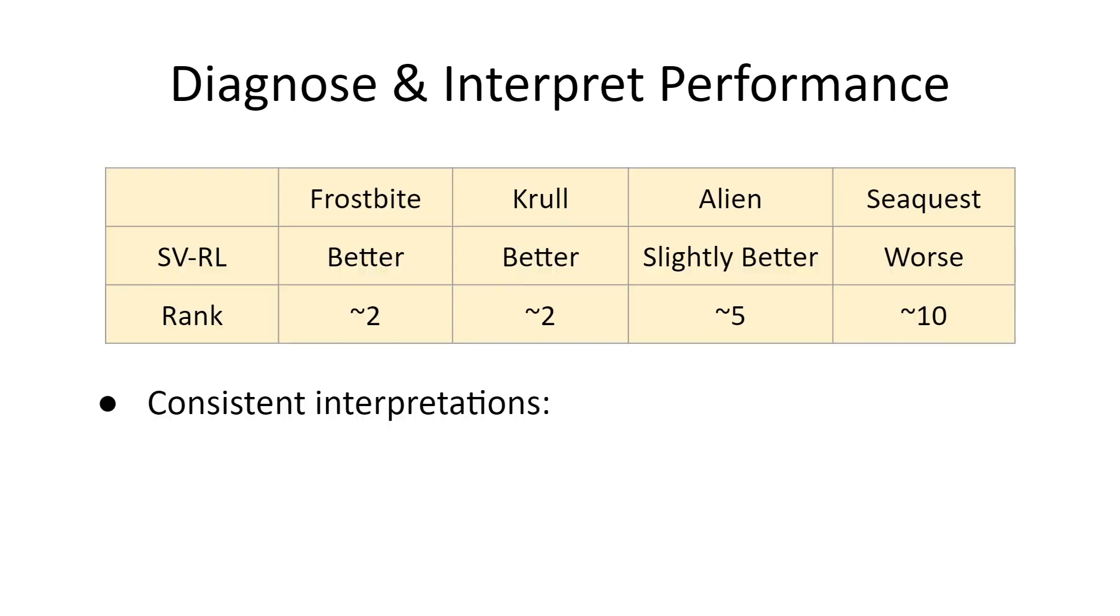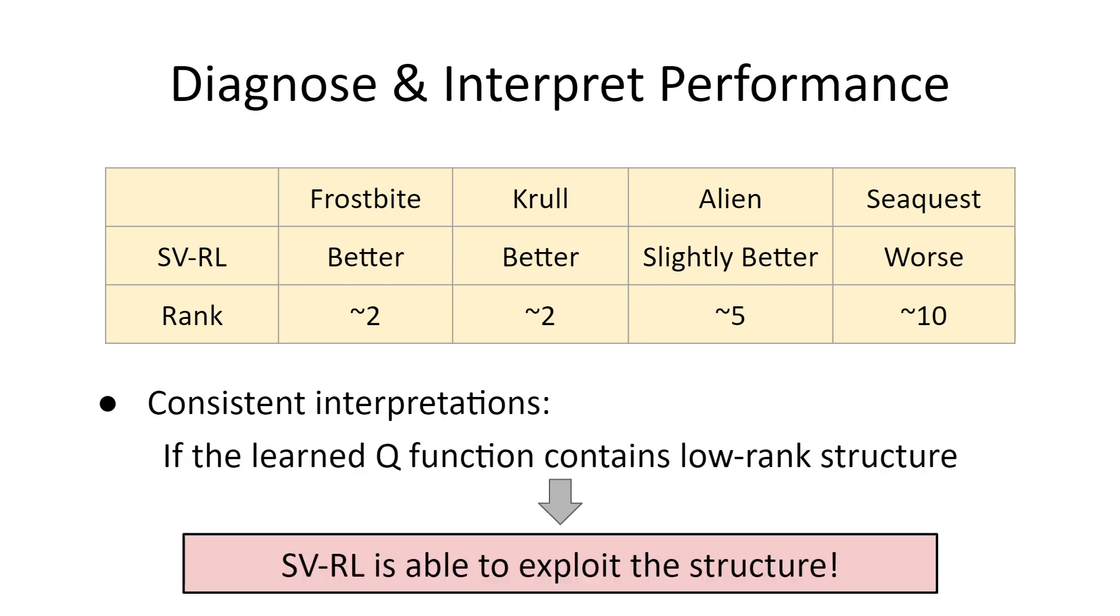To summarize our investigation, we have a consistent interpretation. That is, if the learned Q function indeed contains low rank structure, then SVRL is beneficial. The strengths of the structure would determine the performance gain. In particular, stronger structures tend to enjoy larger improvements. In addition, for those minority high rank games such as Seaquest, we can estimate few entries via ME and check the reconstruction errors every now and then. If the errors are persistently large, we can fall back to the standard methods. Overall, SVRL is able to exploit the structure and is effective for deep RL tasks.